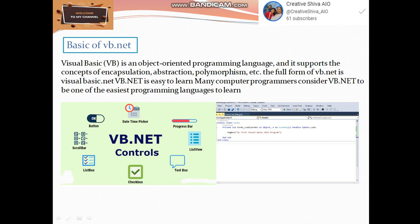Basics of VB.net: Visual Basic is an object-oriented programming language and it supports the concepts of encapsulation, abstraction, polymorphism, etc. The full form of VB.net is Visual Basic .net. VB.net is easy to learn. Many computer programmers consider VB.net to be one of the easiest programming languages to learn. In below, it is a pictorial example of the controls in VB.net.